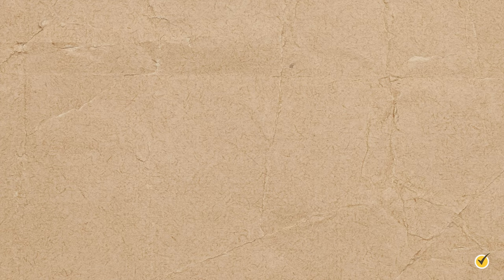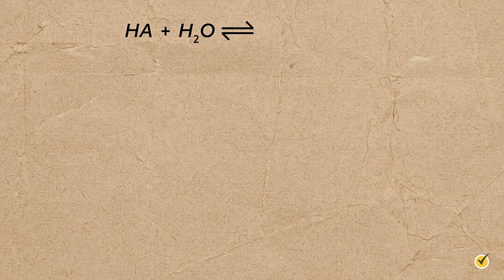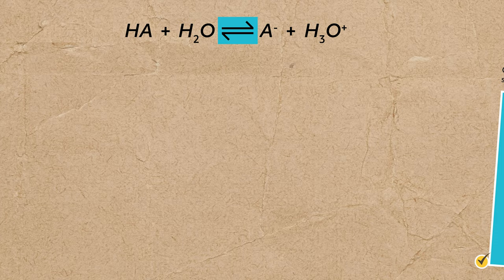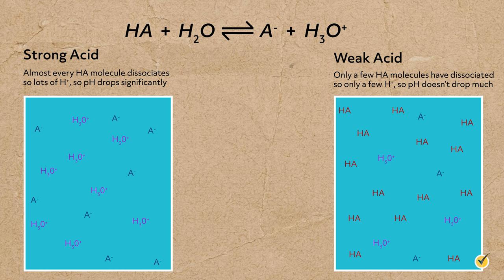Let's delve into this a bit more, starting with acids. When a generic acid is added to water, the acid dissociates, releasing the proton to water to form the conjugate base of the acid and the hydronium ion. As you notice by the double arrow, this is an equilibrium process. The strength of the acid is determined by how much of the acid actually dissociates when added to water. Strong acids completely dissociate, whereas only a portion of a weak acid dissociates, meaning some generic acid always remains in solution.